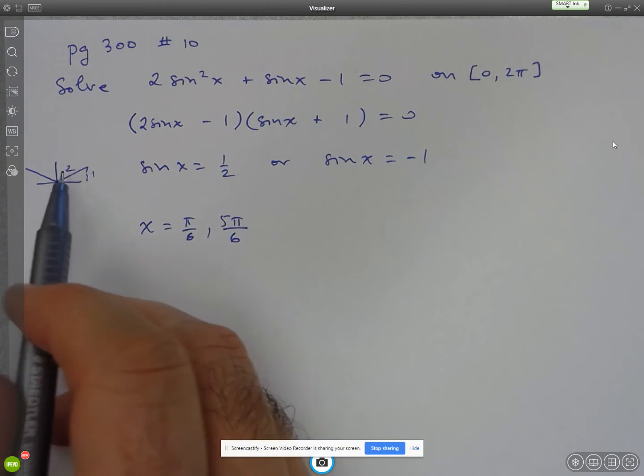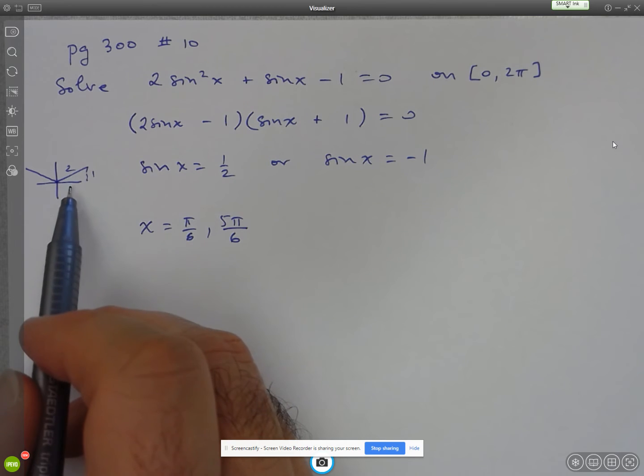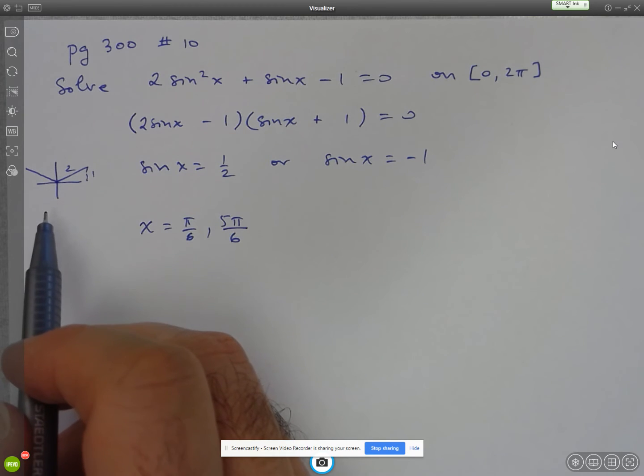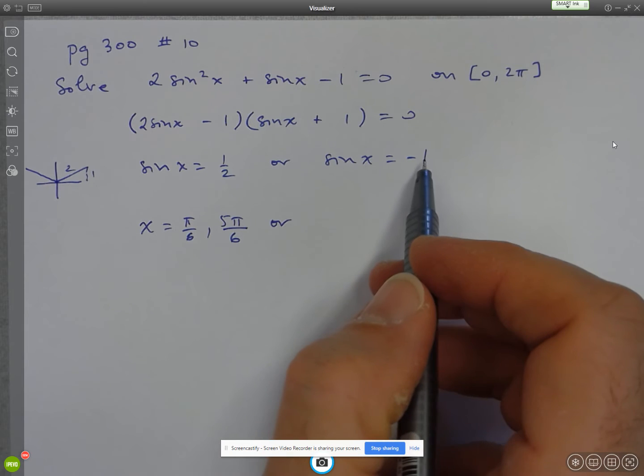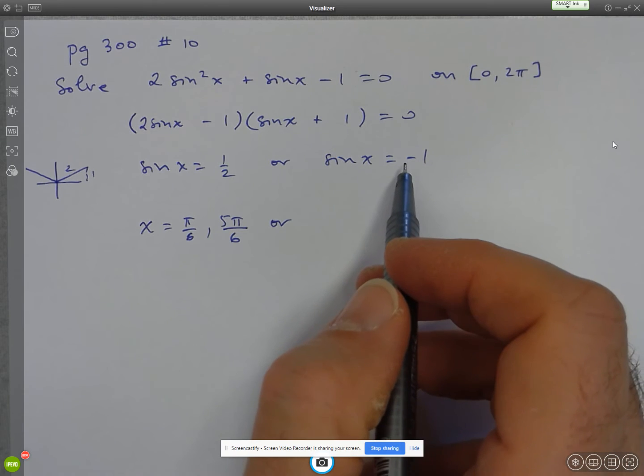Now, since I'm only interested from 0 to 2 pi, those are going to be all the answers that I've got. All right. Now, from this equation here, sin x equal to negative 1.